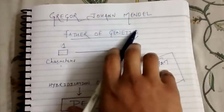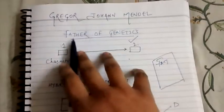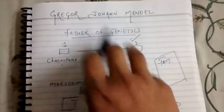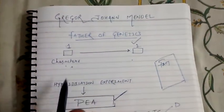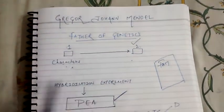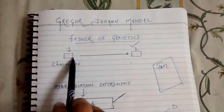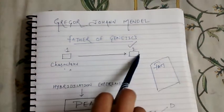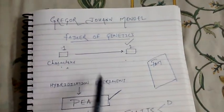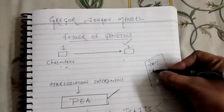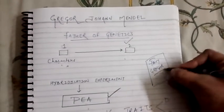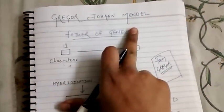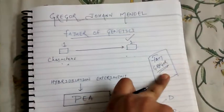Today we will talk about Grigore Johan Mendel. Who was he? He was the father of genetics, which means he has done a lot of work in genetics. His work was mainly around the transmission of characters from one generation to the next generation. The name Grigore actually came later on in his life — it was originally Johan Mendel, but he got the name Grigore later on.